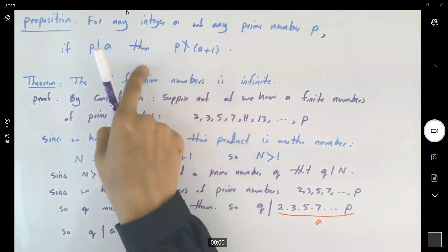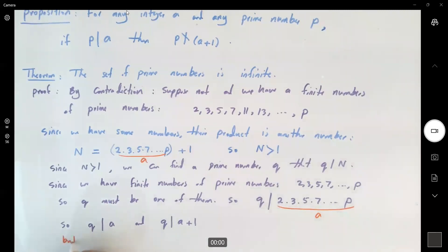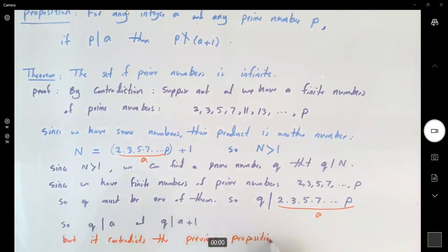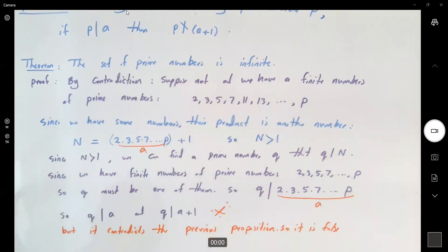But from proposition, we know that it cannot be true. But it contradicts the previous proposition. So it is false. We reach to a contradiction. It means that our theorem is true.